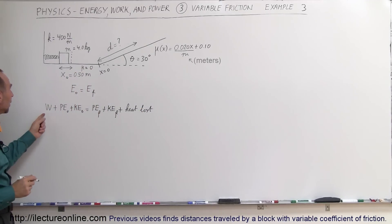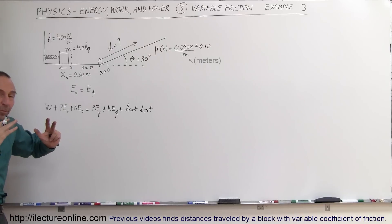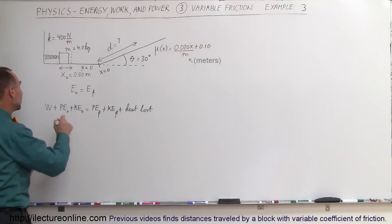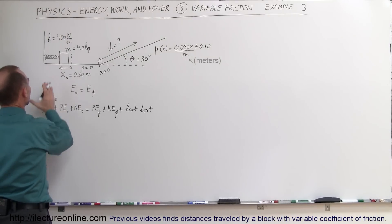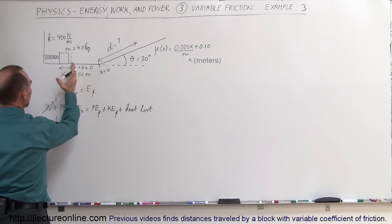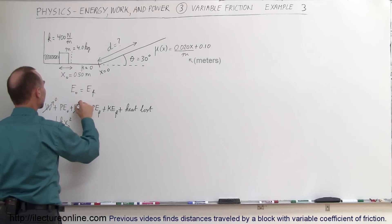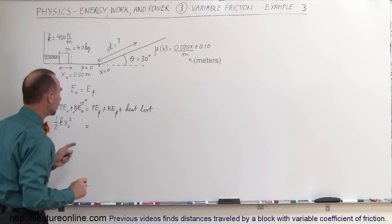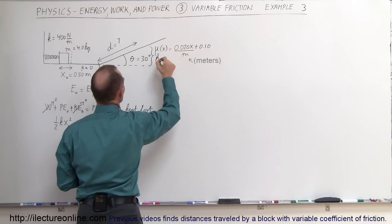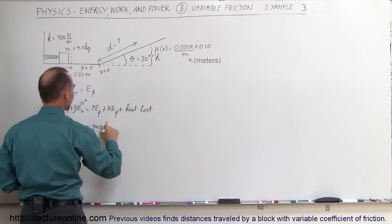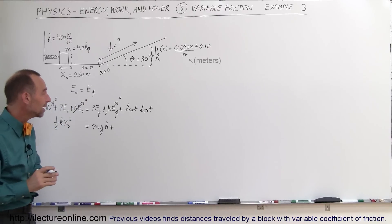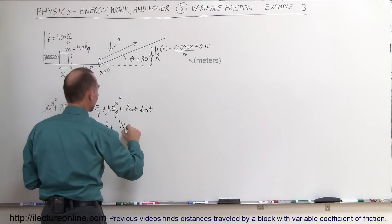Is there any work put into the system? Someone had to push the spring together, but we already account for that in the potential energy portion, so we call external work zero. Initial potential energy is one-half k x-initial squared. There's no initial kinetic energy since nothing is moving. Final potential energy is MGH gained as the block rises, with no final kinetic energy since the block reaches its maximum height, and heat loss equals the work done to overcome friction.